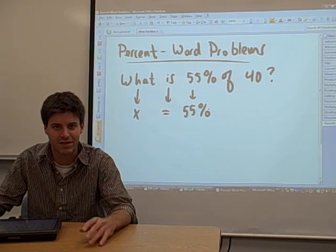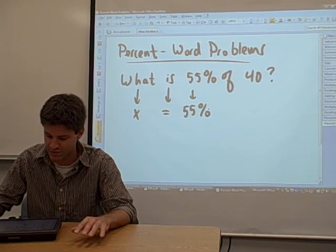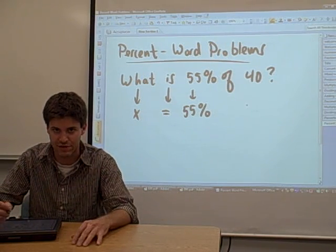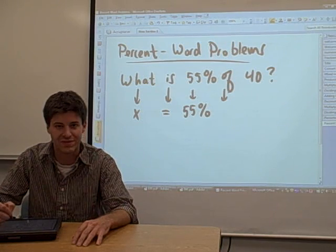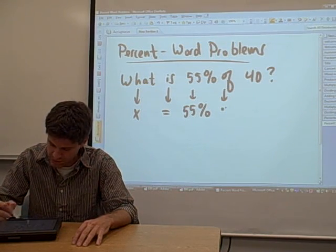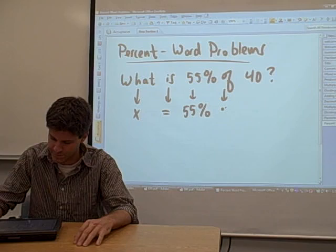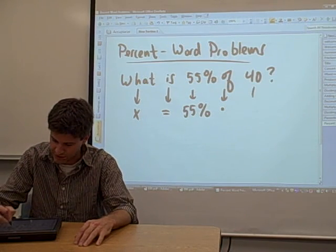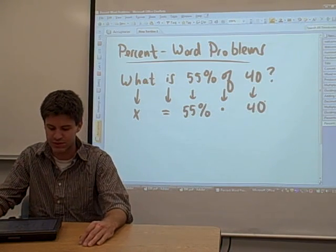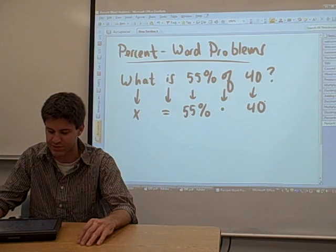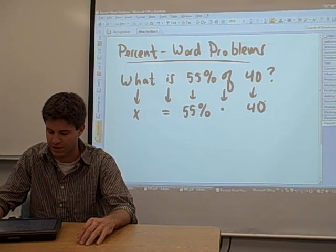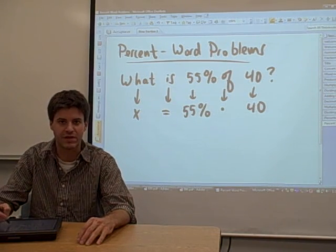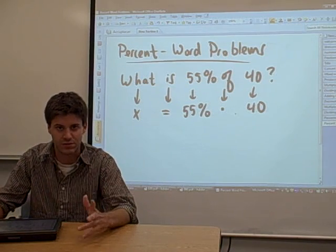Of, in many cases, if you go to your list of keywords in the 030.pdf file, is associated with multiplication. So I'm going to put a little times sign in there. 40 is just a number, so I'm going to copy it straight down. So we took this question, what is 55% of 40, took each word and converted it into a mathematical equation.